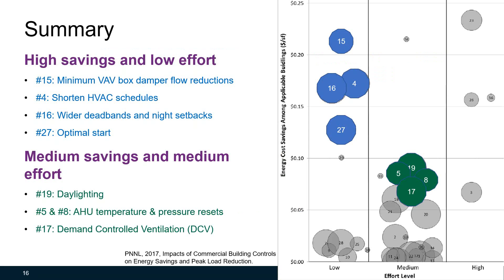Here's the summary of what we discussed today. High savings and low effort advanced control strategies include Number 15, minimum VAV box damper flow reductions; Number 4, shortened HVAC schedules; Number 16, wider dead bands and night setbacks; and Number 27, optimal start. Medium savings and medium effort measures include daylight savings, Numbers 5 and 8 AHU temperature and pressure resets, and Number 17 demand controlled ventilation. Advanced rooftop unit controls is a high-cost measure with significant impact, but only applicable to small and medium commercial buildings without a building automation system. Cooling tower VFD controls is also a high-cost measure, only applicable to large commercial buildings with a cooling tower.